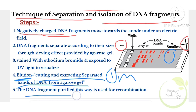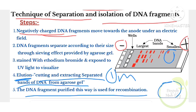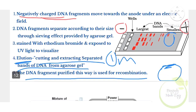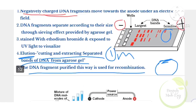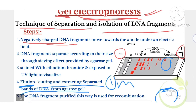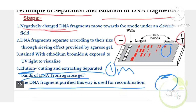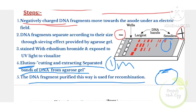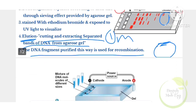The DNA fragment purified in this way is used for recombination. Now, this is about gel electrophoresis. You will draw this diagram. If you cut and label this diagram correctly, you will get 5 marks.